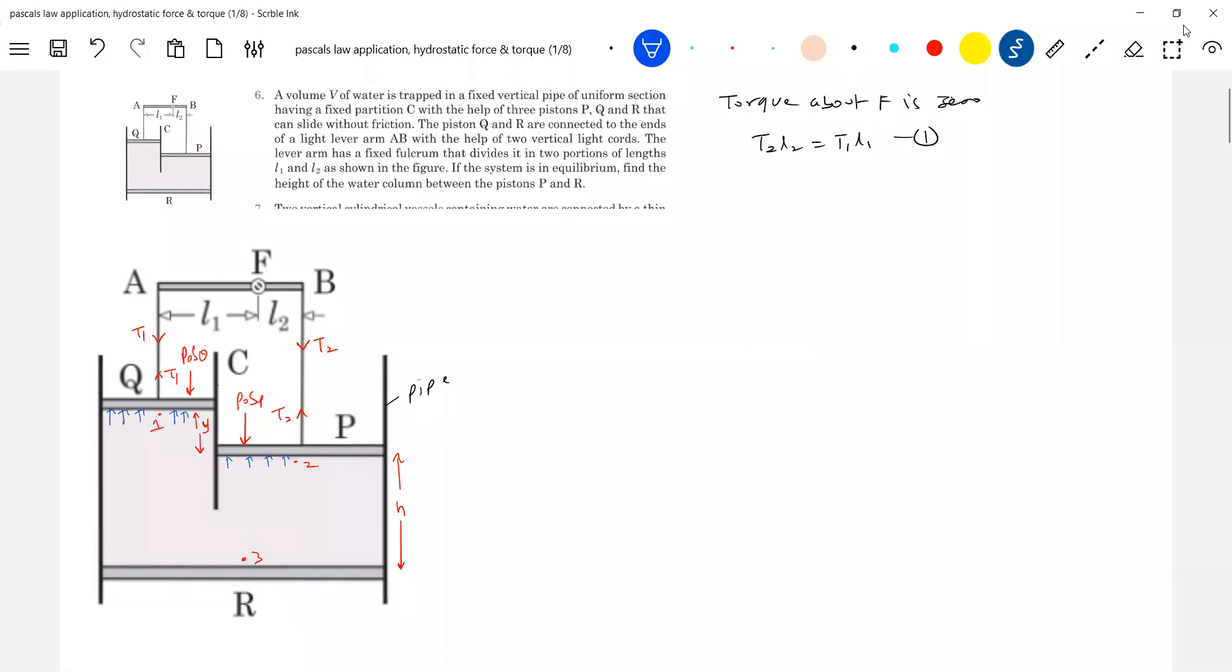What is this? Pressure at that point into area of cross-section. So you write P1 into Sq. Similarly here, P2 into Sq. So let's equate. For the piston Q, what are the forces? P1, so shall we take like this: T1 + P1·Sq - P0·Sq = 0, equation two.